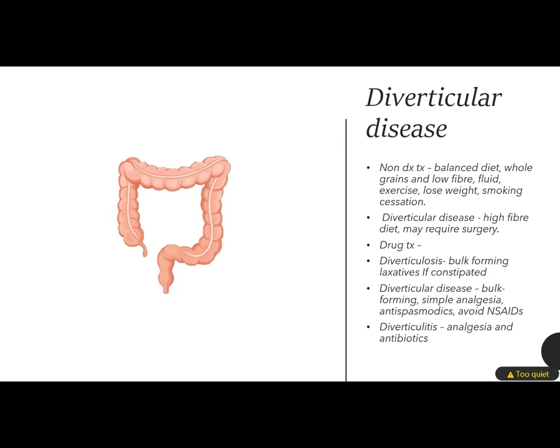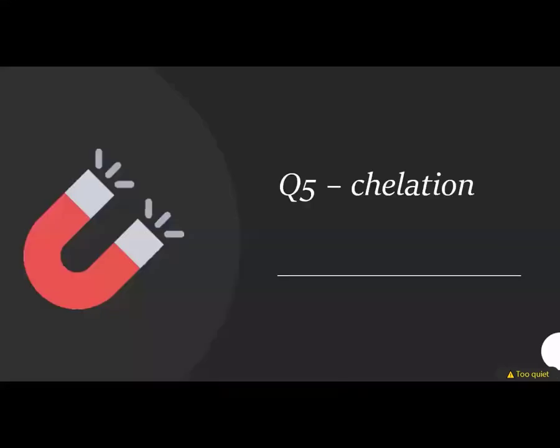For drug treatment of diverticulosis, there is no specific treatment, but bulk-forming laxatives help reduce flatulence and bloating. For diverticulitis, it's going to be bulk-forming laxatives as well as simple analgesia and maybe antispasmodics just to reduce symptoms. For diverticulitis, when the pockets become inflamed or infected and cause severe pain, you may require antibiotics to treat it. You won't really be questioned on the pathophysiology — I'm just going over it so we have a solid understanding. Maybe watch a video on it and it will be easy to understand.